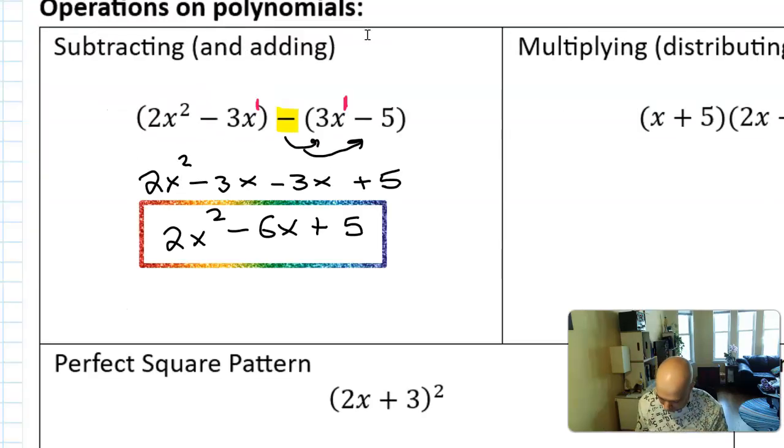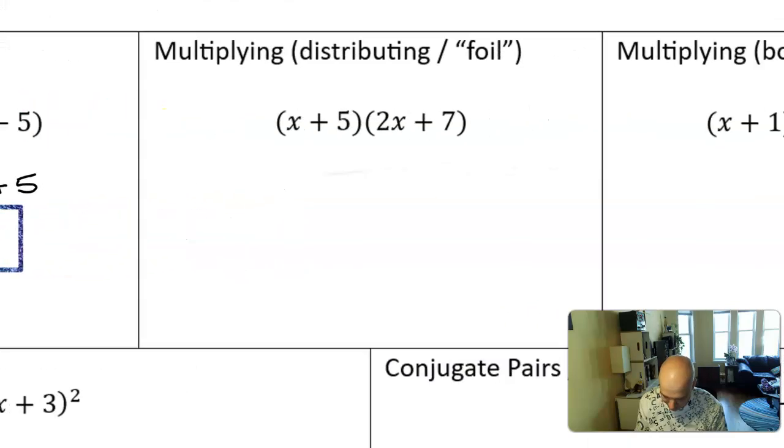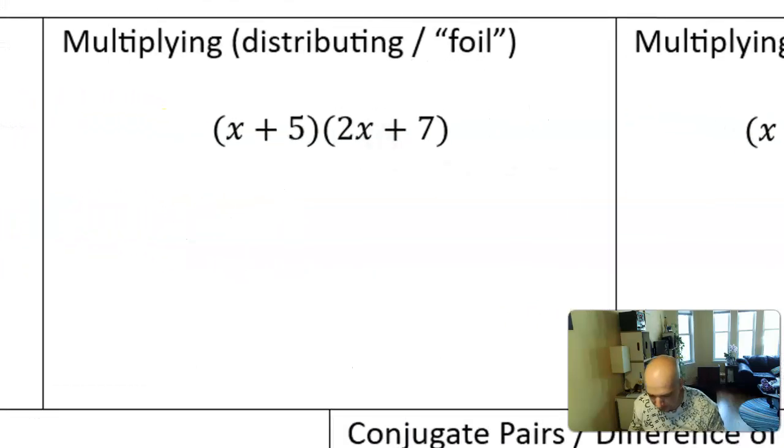The next thing you might have to do with two polynomials is multiply them together. And what's important to remember when multiplying polynomials is that you have to use the distributive property. That means each part of the first polynomial must be multiplied to each part of the second polynomial, and it helps to follow an organized process. So sometimes math teachers call this FOIL, which stands for first, outer, inner, last. I like to just call it distributing.